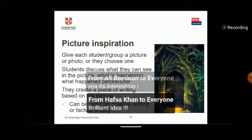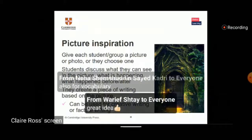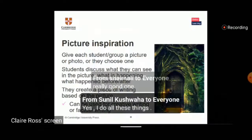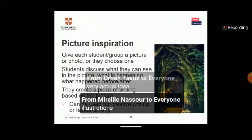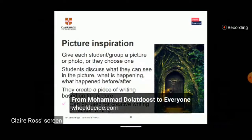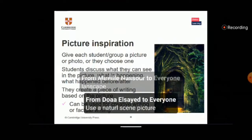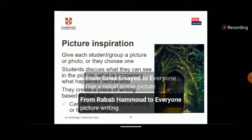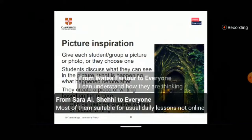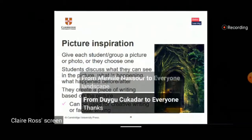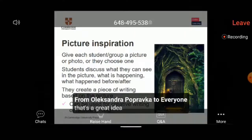One of my favourite activities in creative writing is to give students a picture or a photo — or let them choose one. They talk about what they can see in the picture and imagine how it could be part of a story or an event. Then they create a piece of writing based on it. You can use this for primary learners — giving them a picture and imagining and writing the story — but also for factual writing like a newspaper report, an interview, or something more formal. It's a really nice way to stimulate imagination.